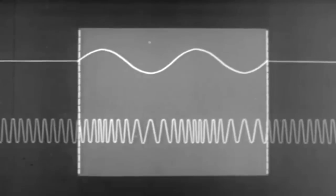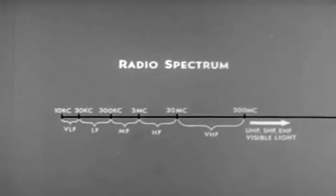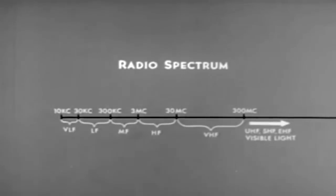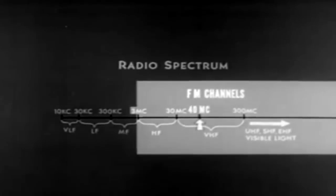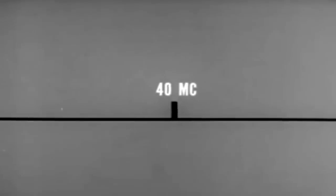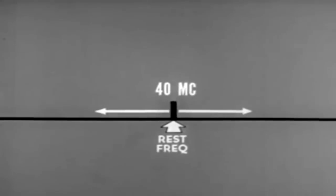The relationship of the audio signal and its carrier can be observed even more clearly by studying a typical military FM channel. Just where in the radio spectrum are FM channels assigned? The nature of FM normally requires a greater bandwidth than with AM. Therefore, FM communication channels are normally assigned above the medium frequency band. A typical FM channel at 40 megacycles would be located here. This is the rest frequency of the channel. When the carrier is frequency modulated, it will move above and below its rest frequency — in other words, it will need room on the spectrum to carry its frequency variations.